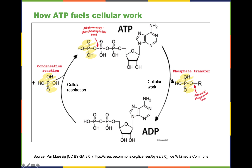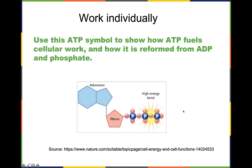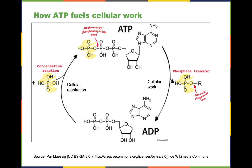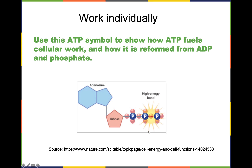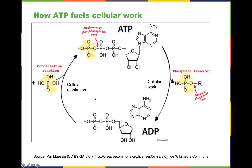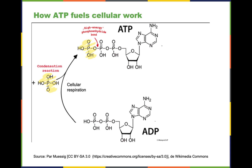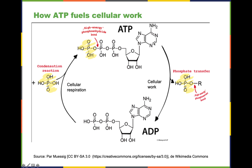You have this high-energy molecule going down to a low-energy state, and the energy released drives the work that needs to be done — and remember, this is an exergonic reaction. It would be a good idea for you to reproduce what you've seen here. It doesn't have to be as complex as written; you can simplify it, reconstructing the steps of creating ATP from ADP and phosphate, and then breaking down ATP back to ADP and phosphate.